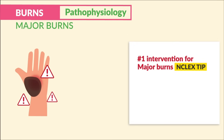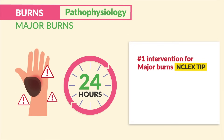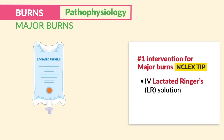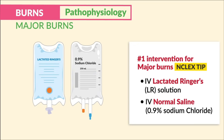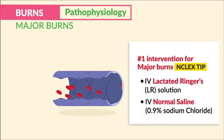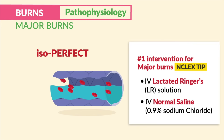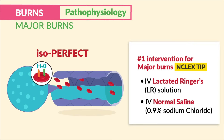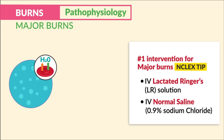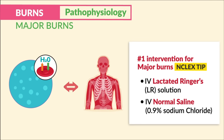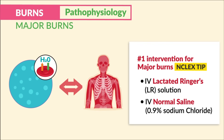This is why the number one intervention for major burns in the first 24 hours is IV lactated ringers or LR solution, and IV normal saline — that 0.9% sodium chloride. These two will help save lives. They are isotonic fluids, which we call isoperfect fluids, since they stay inside the veins longer than any other solution, as they closely resemble the chemical composition of human blood — increasing the fluid volume inside the blood vessels, increasing the blood pressure, and saving your patient's life.